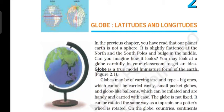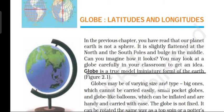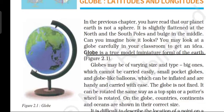First, let us read the first paragraph. In the previous chapter you have read that our planet earth is not a sphere. It is slightly flattened at the north and the south pole and bulges in the middle. You may look at a globe carefully in your classroom to get an idea. A globe is a true model, a miniature form of the earth, as shown in figure 2.1.